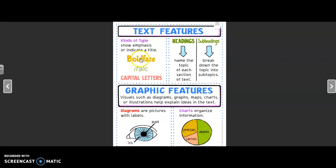There are lots of different kinds of text features to show emphasis or indicate a title. There's boldface words, which means they're darker and bigger than normal, italic, which means they're slanted, they're leaning over, and all capital letters. All of these show that something is important, something we need to be paying attention to.